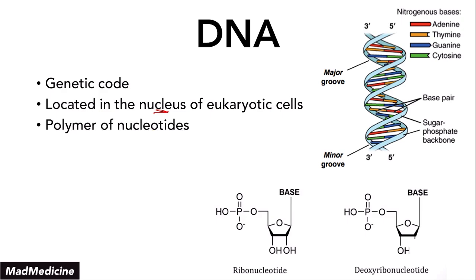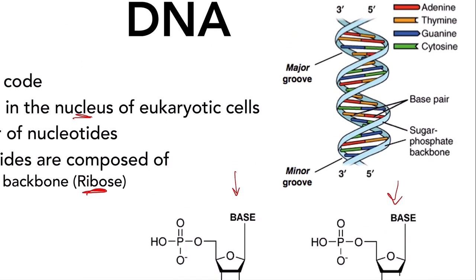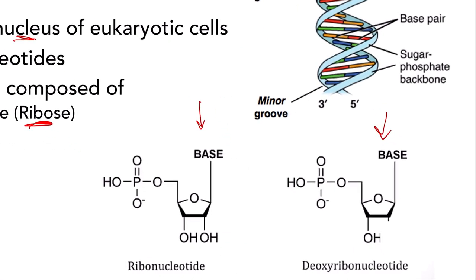DNA is essentially a polymer of nucleotides. Nucleotides are composed of three main components. Number one, you have the sugar backbone, which is a ribose-based sugar. This structure is very important because you need to understand the difference between ribonucleotides and deoxyribonucleotides — one says ribonucleotide and one says deoxyribonucleotide.